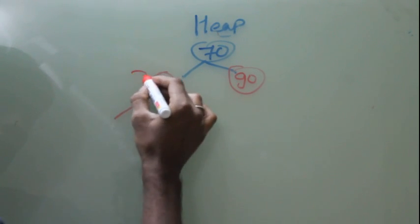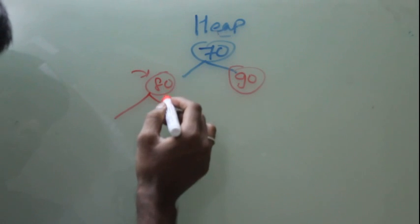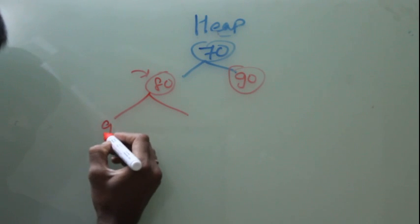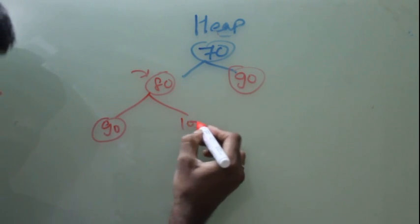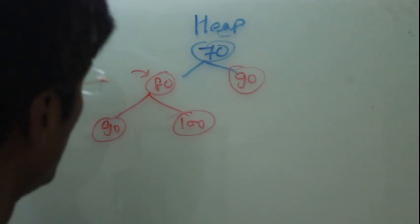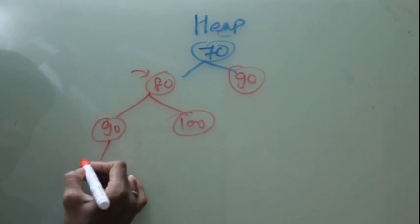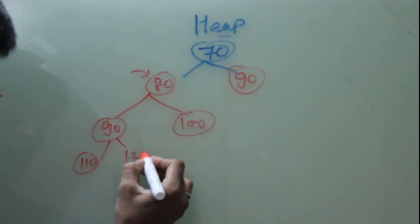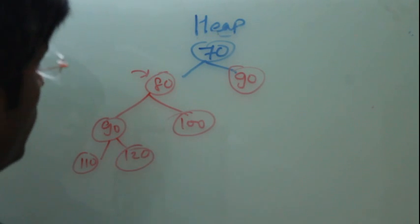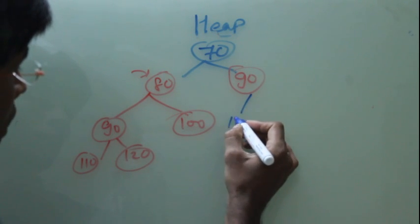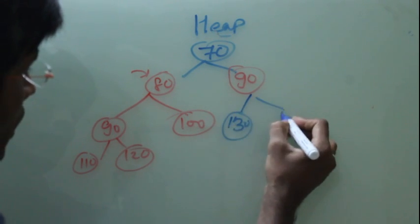So now if I consider this as parent, it has to be less than its left child and right child. I will say 90 and 100. So similarly in case of 90, it's 110 and 120. So similarly we will do for this and then 30 and then 40.